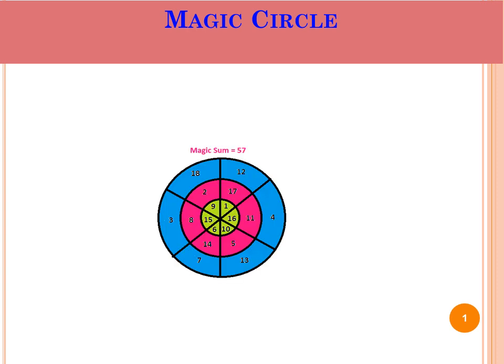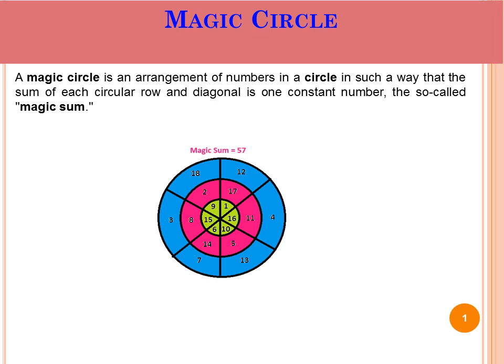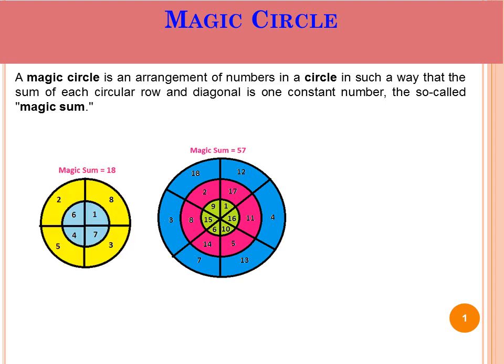Hey guys, in this video I am going to show you magic circle. A magic circle is an arrangement of numbers in a circle in such a way that each circular row and diagonal have the same sum. That is called magic sum.